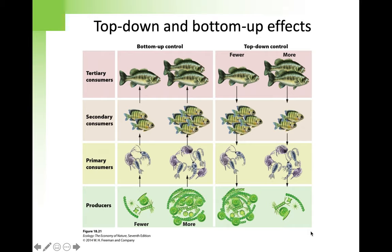It changed the nature of the system. As the experiment continued, the line of mussels advanced down the rock face, monopolizing almost all of the available space and pushing all other species out. Payne had discovered that one predator could regulate the composition of an entire community.